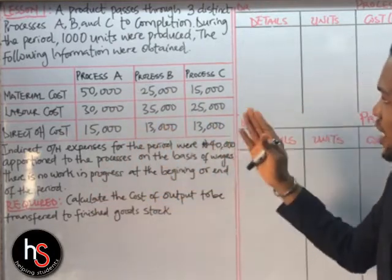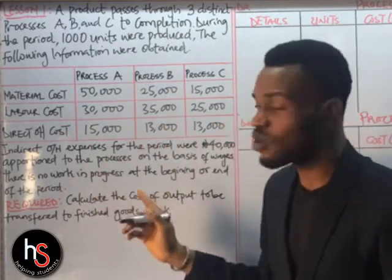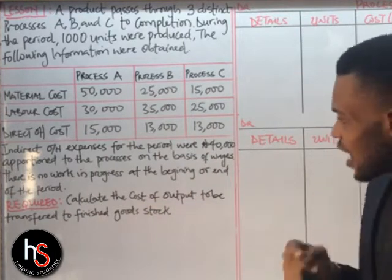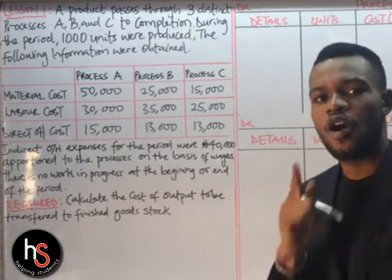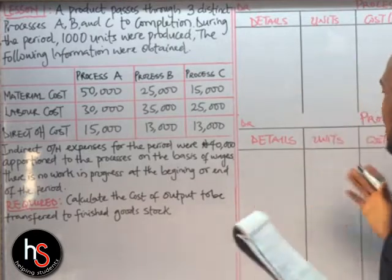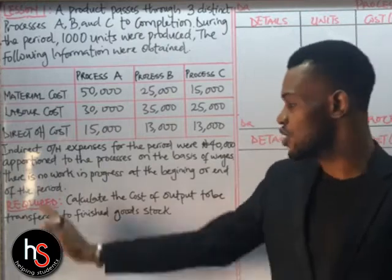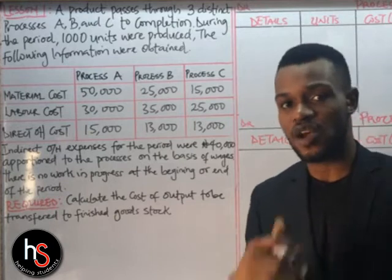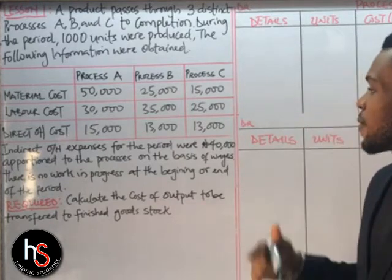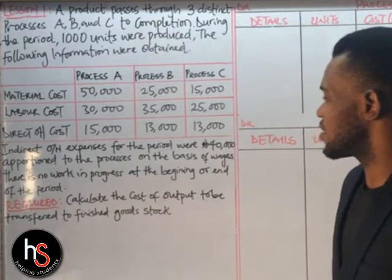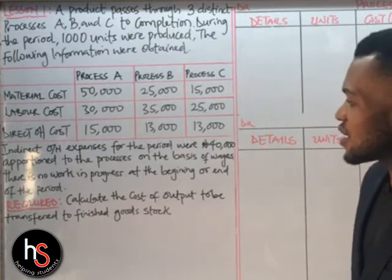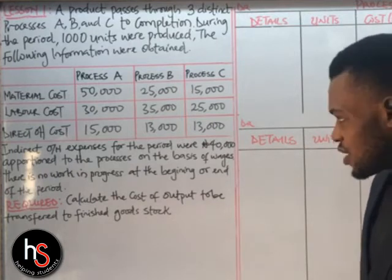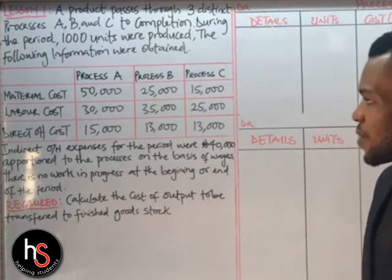We have labor costs for process A, B, and C, and direct overhead costs for process A, B, and C. There is additional information — always take note of it before you start answering any question. The additional information says: indirect overhead expenses for the period were 40,000 Naira, apportioned to the processes on the basis of wages. There is no work in process at the beginning.